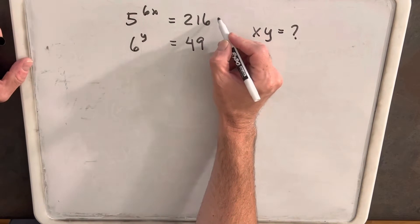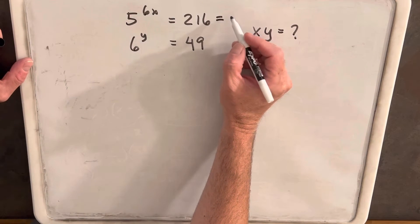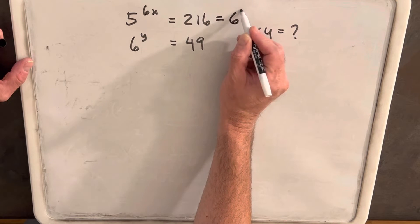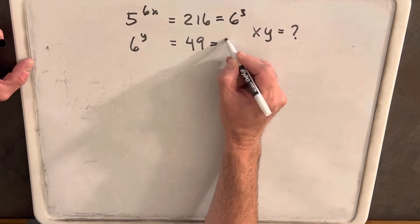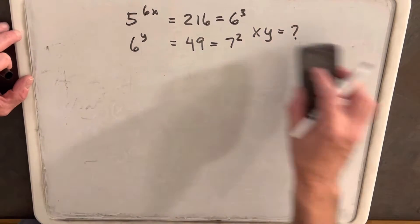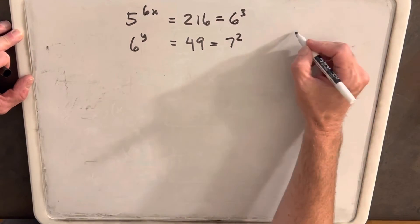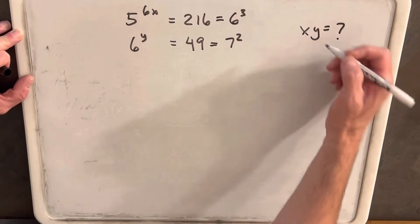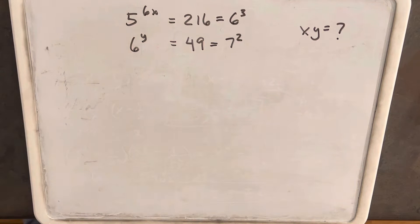So what I'm going to do to start with, I'm going to actually rewrite the equations on the right. So we'll write this one as 6 cubed, and we'll write this one as 7 squared. I think that should help. And I should say, we're asked to solve xy. We don't have to solve for x and y independently.